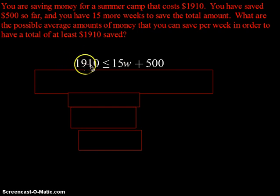We have, this is the total amount of money I want to save. This is how much I've already saved, and this is how much I need to save remaining. I want it to be at least, so that means equal to or greater than this amount.